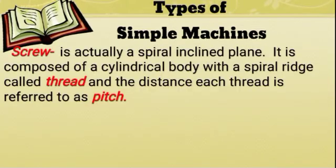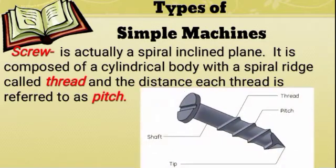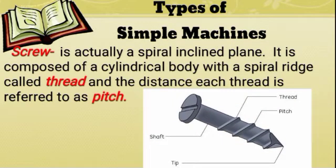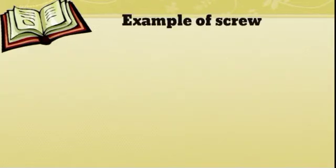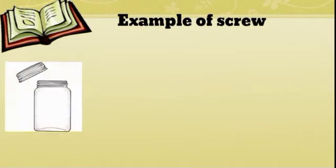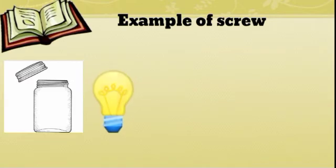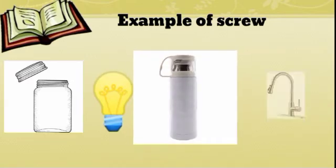Another type of simple machine is a screw. A screw is actually a spiral inclined plane. It is composed of a cylindrical body with a spiral ridge called thread, and the distance between each thread is referred to as pitch. Here are some examples of a screw: jar lid, light bulb, bottle caps, and faucet.